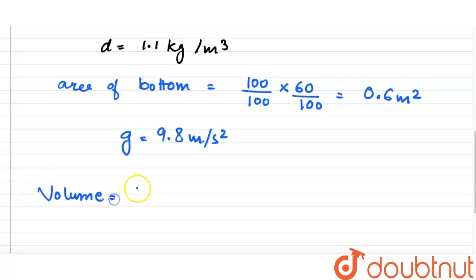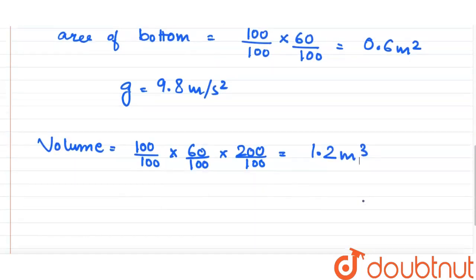Now volume of vessel will be equal to 100/100 × 60/100 × height that is 200/100. Total volume will come out to be 1.2 meter cube.